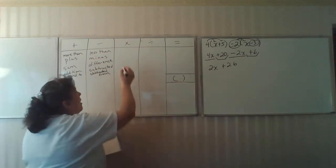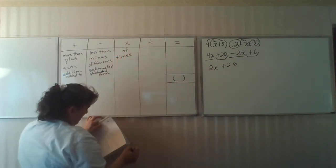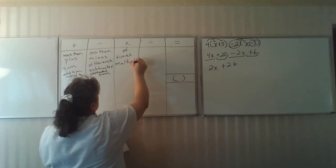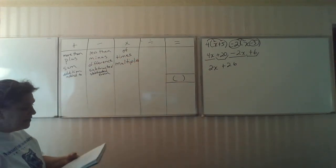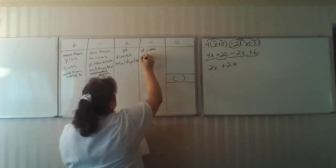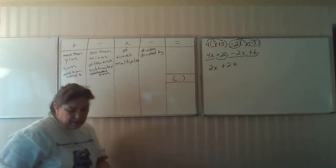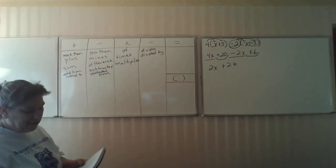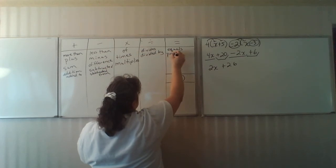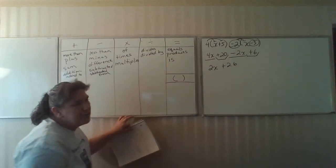Multiplication: of is a real common one, times, multiplies. Division: divides, divided by is a common one. Equals: of course the word equals is common, produces is another common word, is is maybe the most common word used.